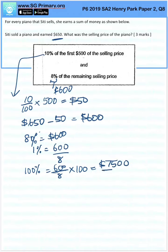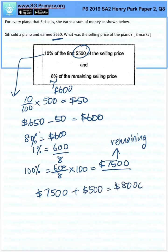Now this is the remaining selling price. Remember that $500 was first deducted from it, so we need to take $7500 plus $500, which will give us $8000.